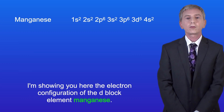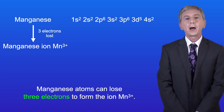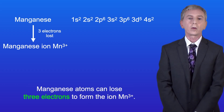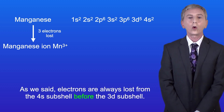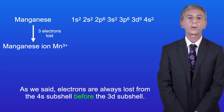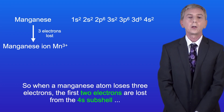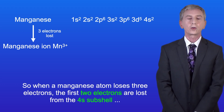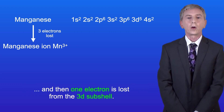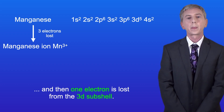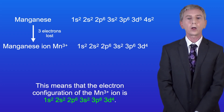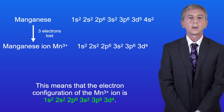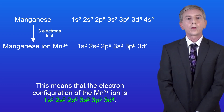I'm showing you here the electron configuration of the d-block element manganese. Manganese atoms can lose three electrons to form the ion Mn3+. As we said, electrons are always lost from the 4s subshell before the 3d subshell. So when a manganese atom loses three electrons, the first two electrons are lost from the 4s subshell, and then one electron is lost from the 3d subshell. This means that the electron configuration of the Mn3+ ion is 1s2, 2s2, 2p6, 3s2, 3p6, 3d4.